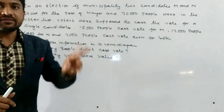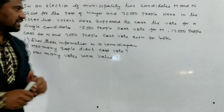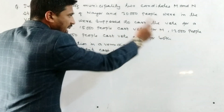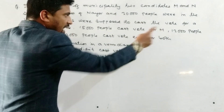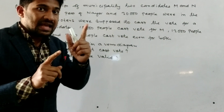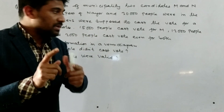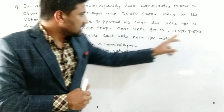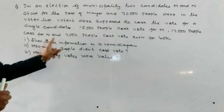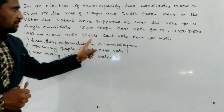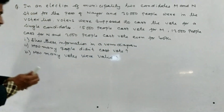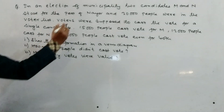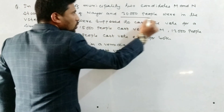15,000 people cast vote for M, 12,000 people cast vote for N, and 2,000 people cast vote for both M and N. This is a different type of set problem, so let's start the solution. The total number of people is 30,000.